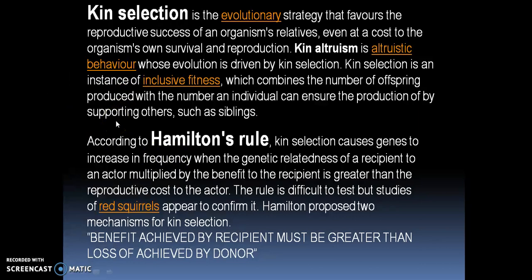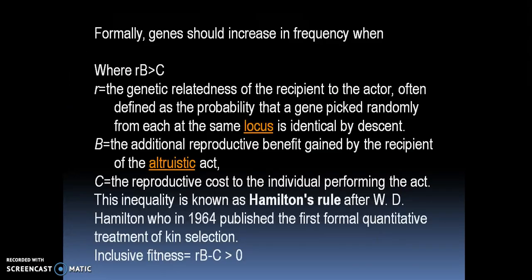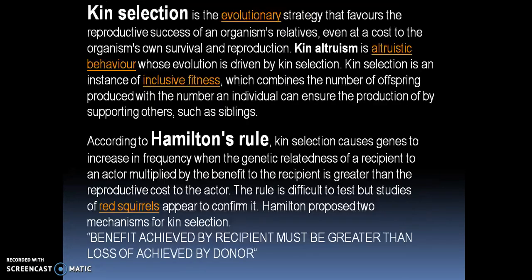Inclusive fitness formula: Rb minus C is greater than 0. Altruism occurs when the value of inclusive fitness is positive. Always remember: altruism will occur when Rb minus C is greater than 0. Equivalently, R is greater than C divided by B, or Rb is greater than C — this is the key formula.